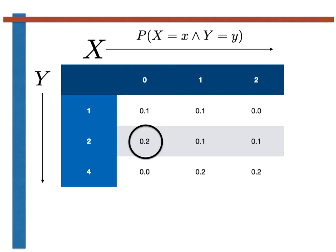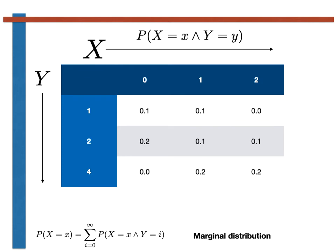We can recover the so-called marginal distributions for the individual variables from this joint distribution by using the expression shown at the bottom of the slide. These marginal distributions are just the familiar probability mass functions for X and Y. The particular marginal distribution we are calculating here tells us the probability that X is equal to small x.